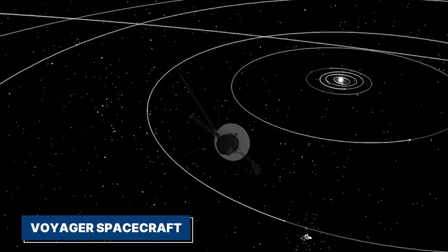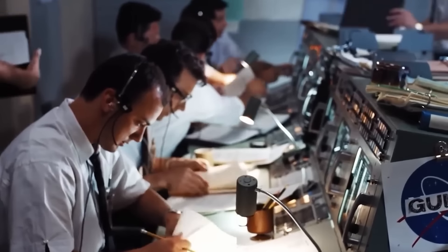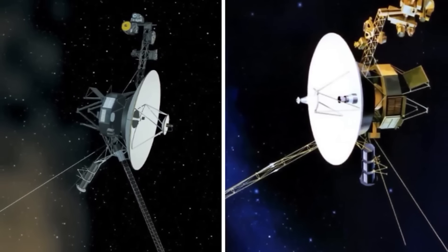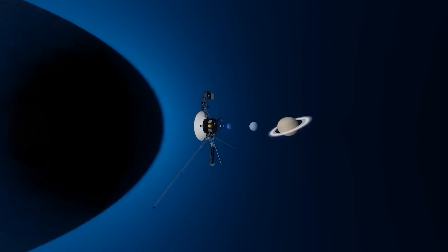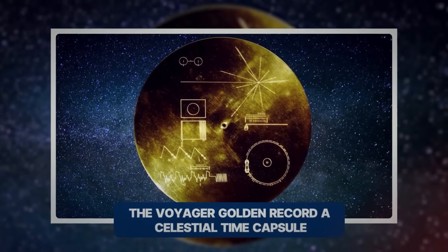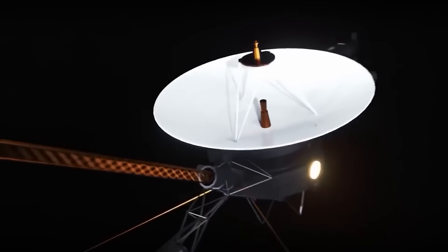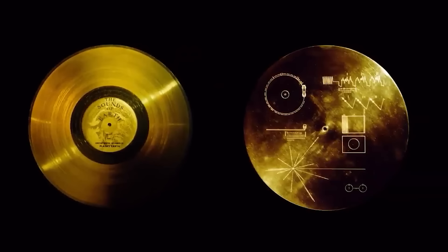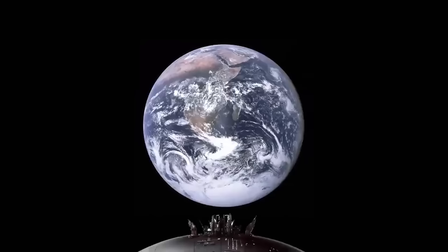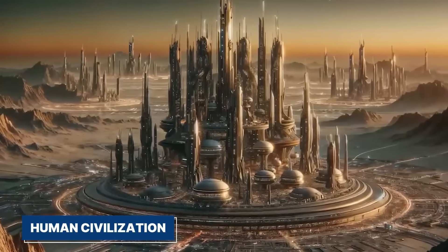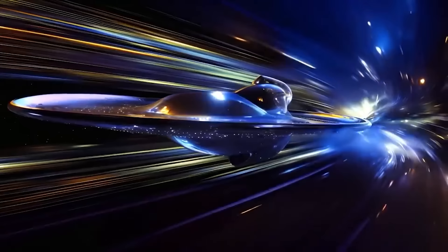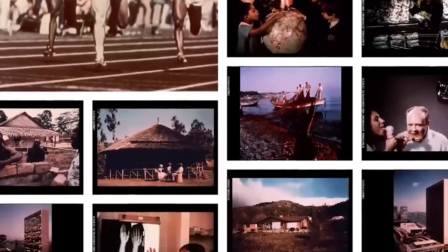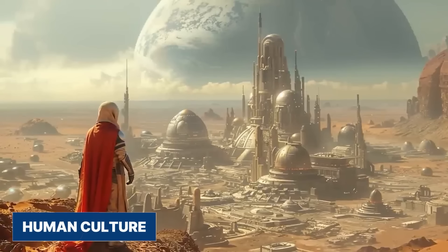The Voyager spacecraft are a testament to human ingenuity and our desire to explore the unknown. Their design and construction have ensured their longevity and scientific success, making them among the most iconic spacecraft in history. The Voyager Golden Record: a celestial time capsule. The Voyager spacecraft carry a unique and enduring artifact, the Golden Record. This phonographic record, etched with sounds and images, serves as a time capsule, a message in a bottle flung into the vast expanse of space. Its purpose is simple yet profound: to offer a glimpse into human civilization to any extraterrestrial beings who might stumble upon it. The Golden Record is a carefully curated collection of sounds and images designed to represent the diversity and richness of human culture.